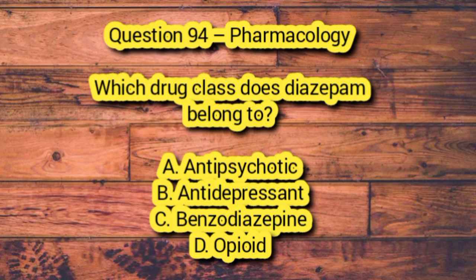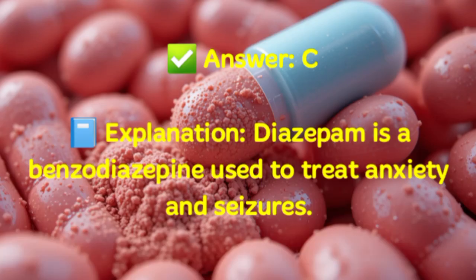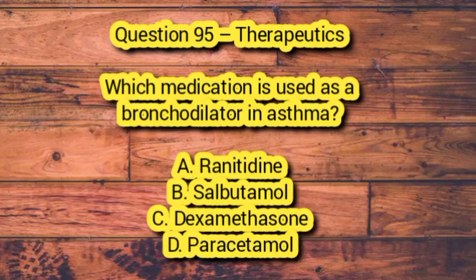Question 94 – Pharmacology. Which drug class does diazepam belong to? A. Antipsychotic. B. Antidepressant. C. Benzodiazepine. D. Opioid. Answer: C. Explanation: Diazepam is a benzodiazepine used to treat anxiety and seizures.